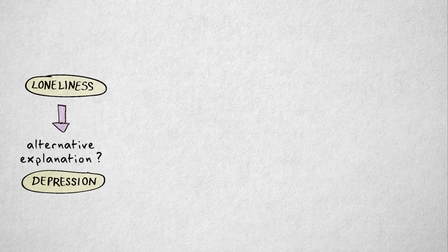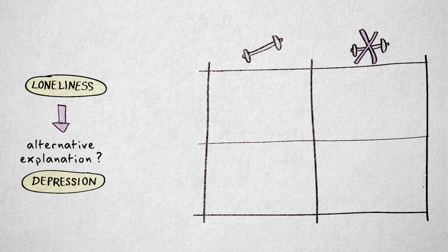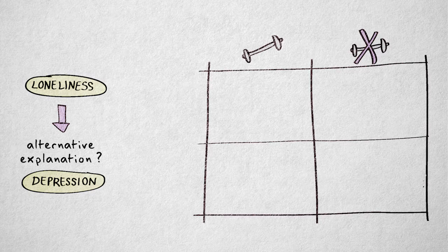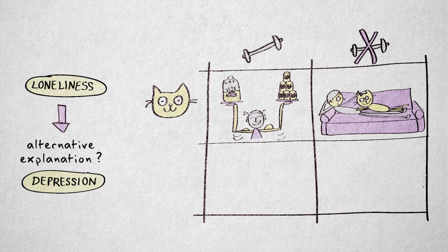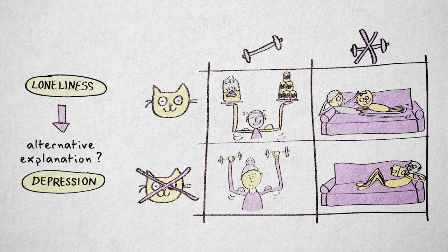For example, we could see if physical activity provides an alternative explanation by measuring it and taking it into account. Suppose we can distinguish inactive and active people. In the cat therapy, there are more active people, but some are inactive. In the control condition, most people are inactive, but some are active.